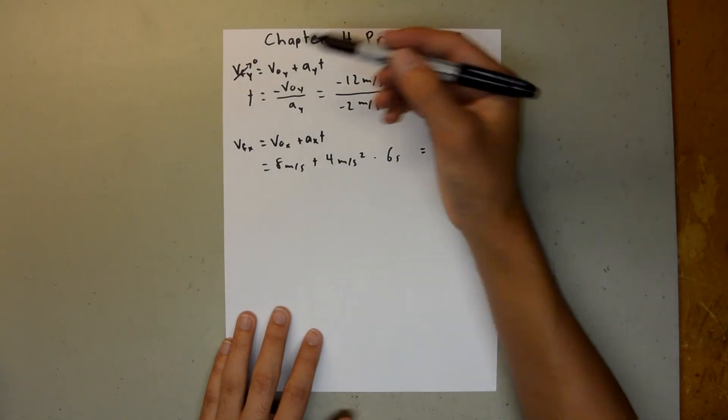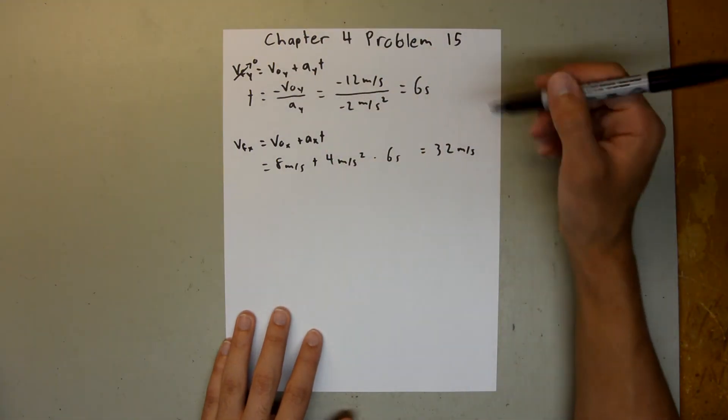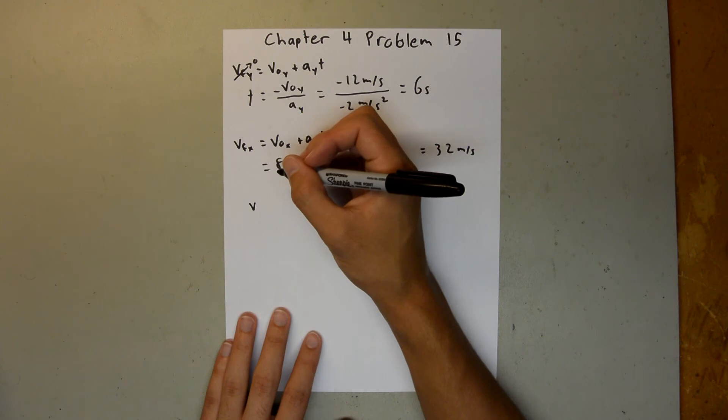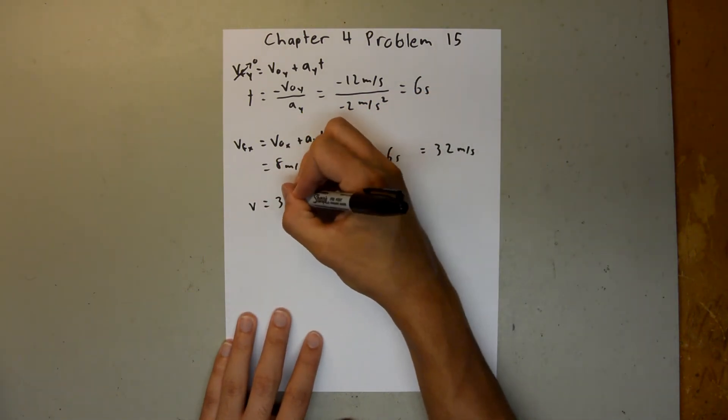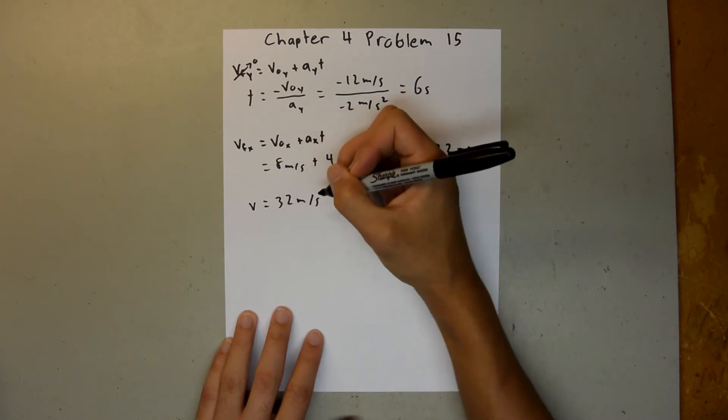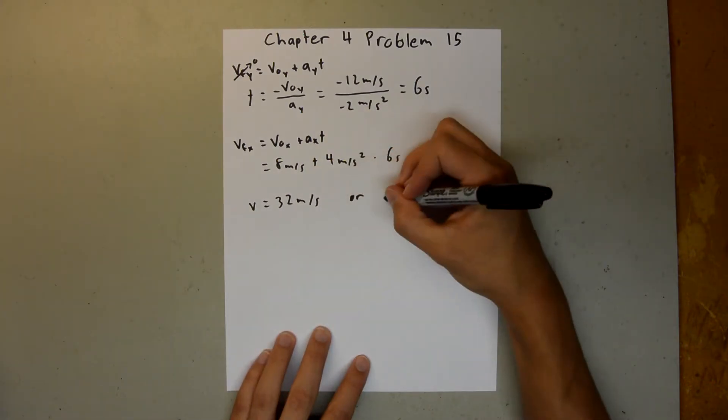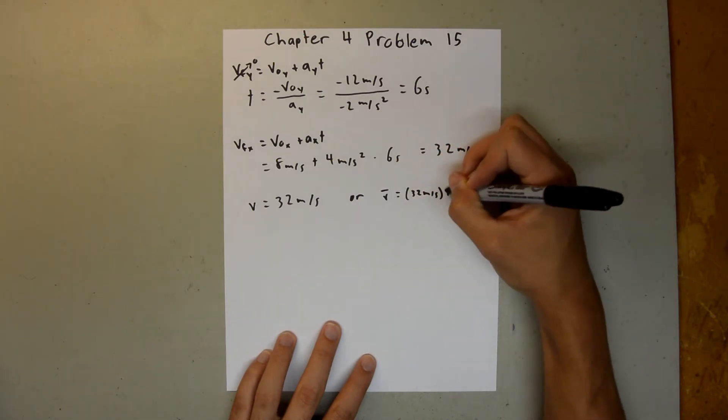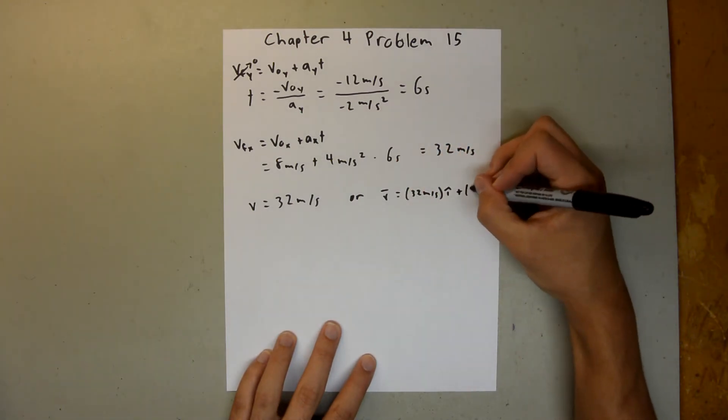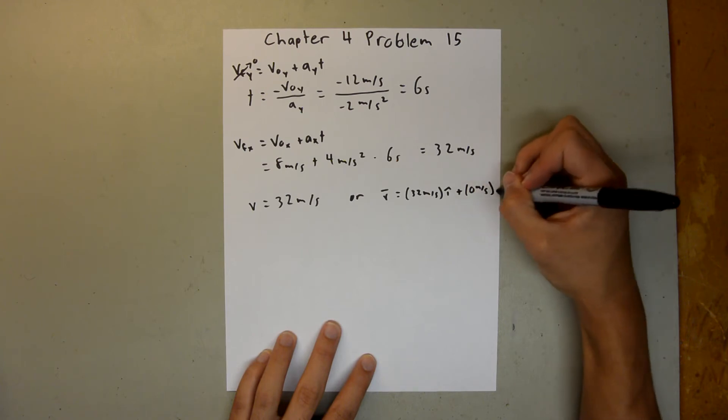And so since we have no final velocity in the y direction, all of our velocity is in the x direction. So when the cart reaches its maximum y value, the velocity is going to be equal to 32 meters per second. Or you could say the velocity vector is equal to 32 meters per second i hat plus 0 meters per second j hat.